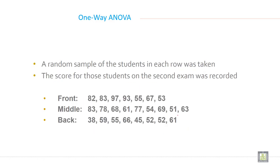A random sample of the students in each row was taken. The score for those students on the second exam was recorded. Front sitter, the score is this, middle sitter the score is this, and back sitter score is this. So you have a score of all these three groups.